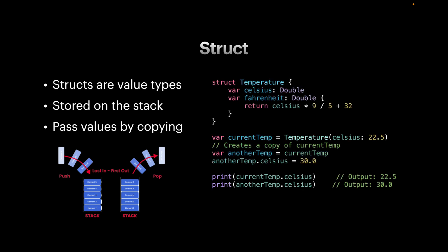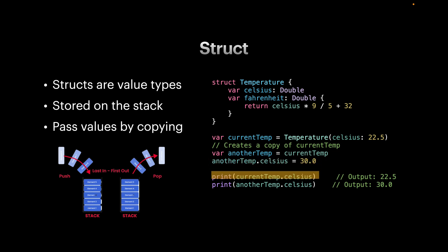In this struct we have two variables: celsius and fahrenheit. The fahrenheit is a computed property that returns the calculation. We create a current temp and set it to 22.5 degrees celsius. When we create another variable called another_temp and assign current_temp to it, it makes a copy. So when we assign another_temp to 30 degrees celsius, it doesn't affect current_temp — it prints 22.5 while another_temp prints 30, because they are independent.